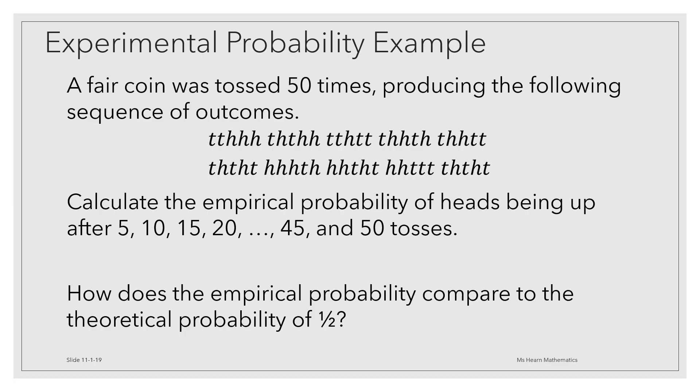Consider this example. A fair coin was tossed 50 times, producing the following sequence of outcomes. Calculate the empirical probability of heads coming up after every five tosses of the coin. How does the empirical probability compare to the theoretical probability of flipping the coin and getting heads, which would be one half? In other words, compare what's actually happening to our theoretical probability, which is what we expect to happen.